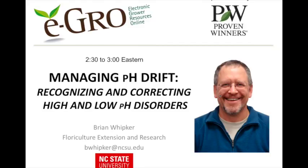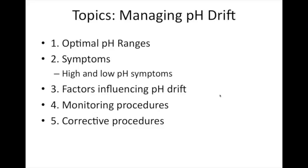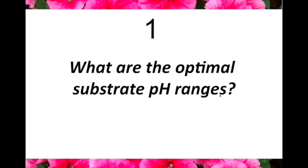So third time's a charm — that means there's not going to be any computer glitches this time. I'm looking at talking about some of the details about pH drift. John Gato suggested this topic because he's gotten a lot of calls at Proven Winners that there are still some problems going on, and it would be a good review. So what we're going to do today is look at those optimal ranges, then look at the symptoms of both high and low pH, the factors that influence pH drift, the monitoring procedures, and finally the corrective procedures.